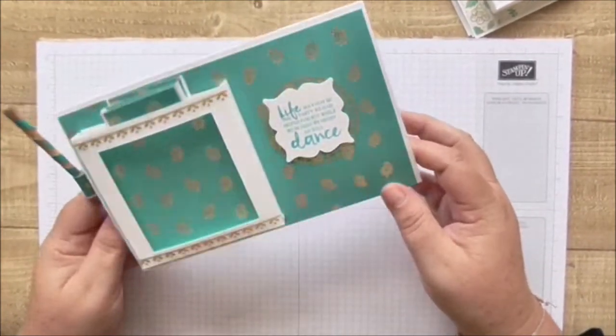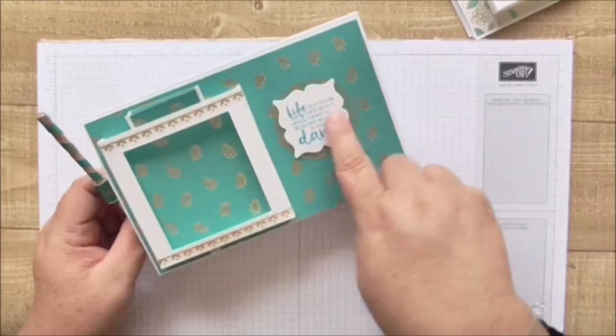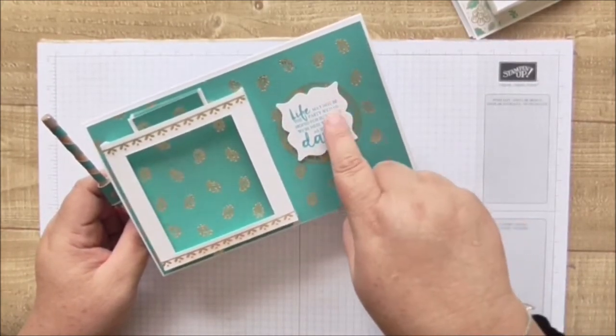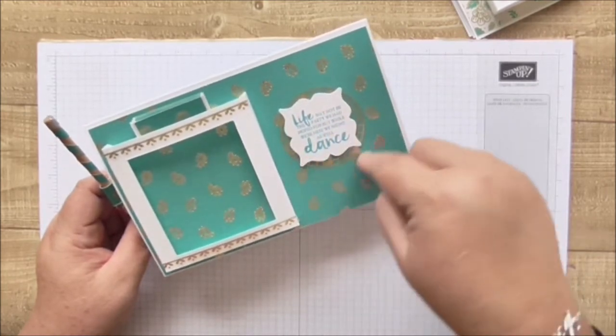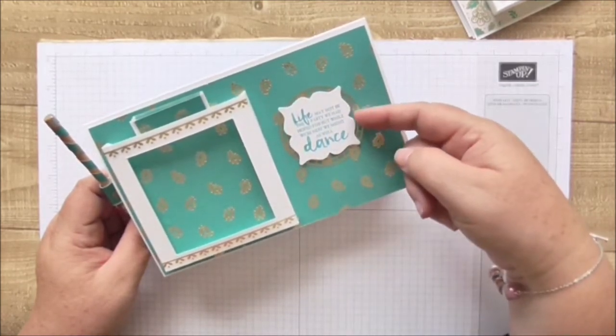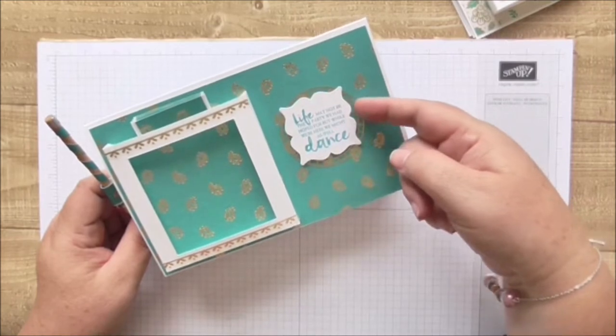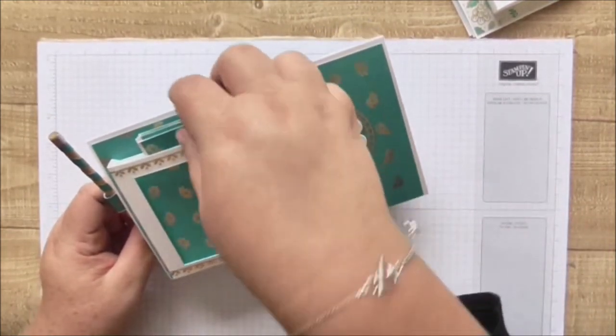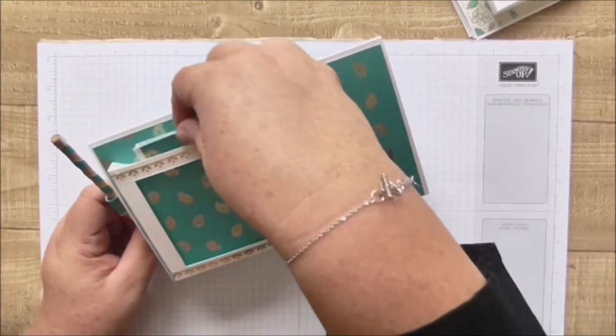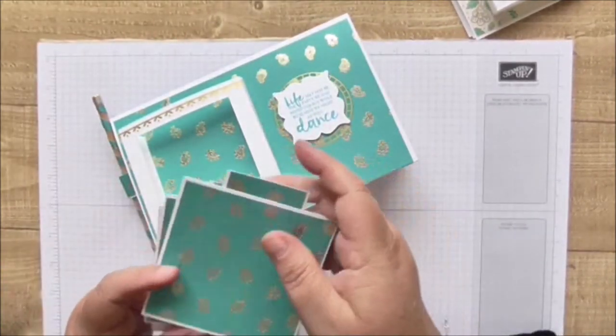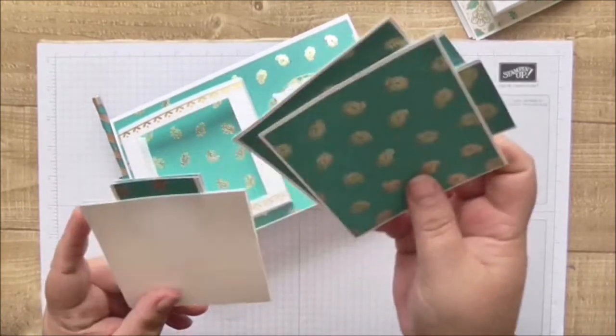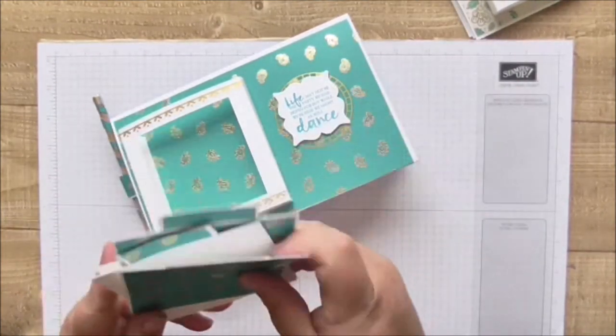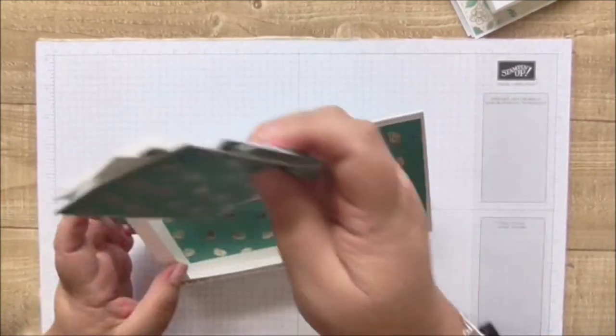So I made this one first. This one's got this little sentiment on it from the Beautiful You stamp set, and then behind it is a sticker from the Eastern Delight Suite. I've used stickers again to edge this photo frame, and then there's a few little cards that you can stick photographs onto, some are plain, some are patterned to just stick into your photo frame there.